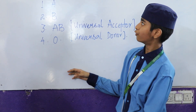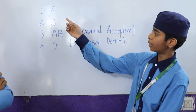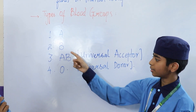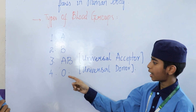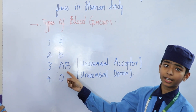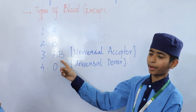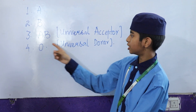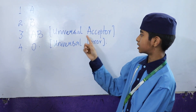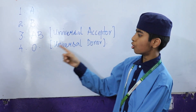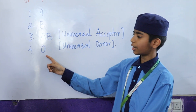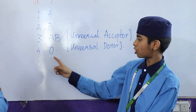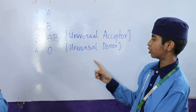There are four types of blood groups: A, B, AB, and O. AB can take blood from any other group, so it is called the universal acceptor. O can donate blood to any other group, so it is called the universal donor.